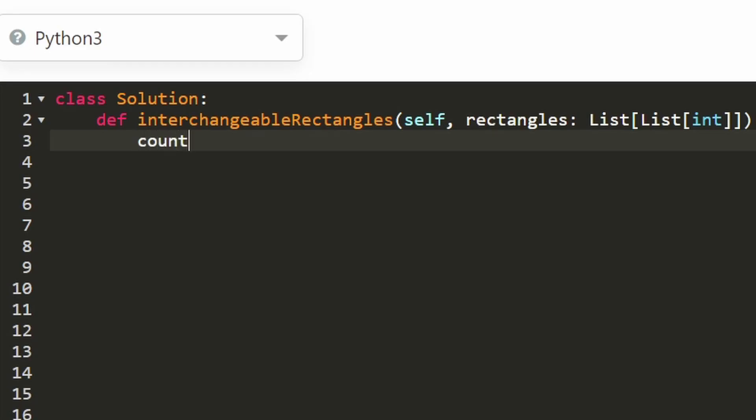Okay so diving into the code, remember we're going to keep track of the ratios with a hash map. So in this case the key is going to be the ratio itself, the width divided by the height. And the value of the hash map is going to be the actual count. So the number of rectangles that have this ratio. So now we're just going to go ahead and iterate through the input array of rectangles.